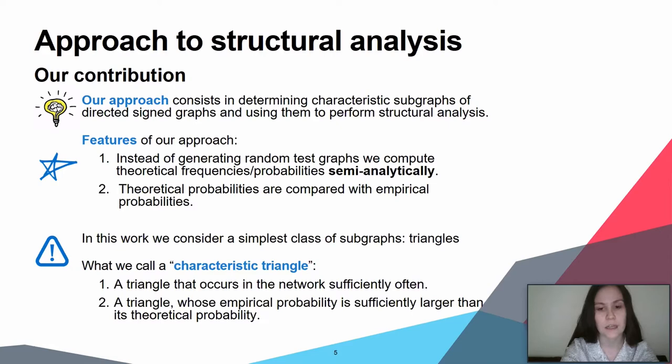When analyzing the structure of a network, it is often instructive to take a closer look at the elementary building blocks of this network. In the following, we will concentrate on the analysis of different oriented signed triangles that appear in a network. We will call a triangle the set of three vertices such that any two vertices are connected by an edge, whereas the direction of edge is not substantial.